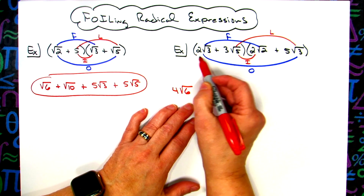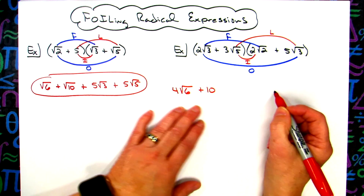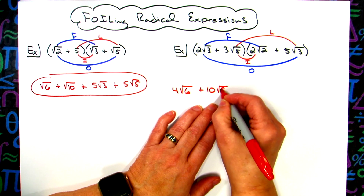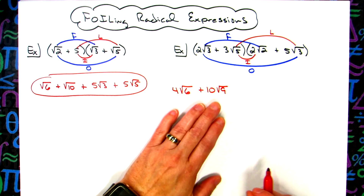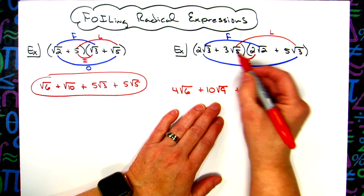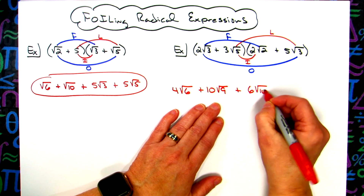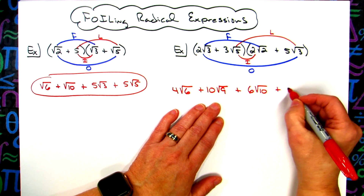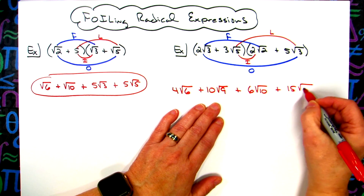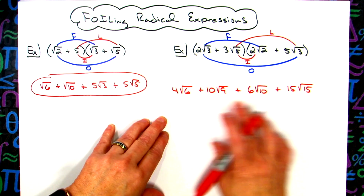Multiplying the outside terms: two times five gives us 10, and square root of three times square root of three would be square root of nine — we'll simplify that in the next step. For the inside terms, three times two gives us six square root of ten. Then for the last terms, three times five gives us 15 out in front, and five times three underneath gives us square root of 15.